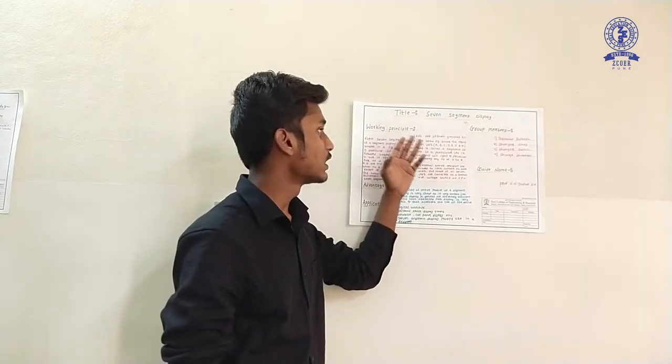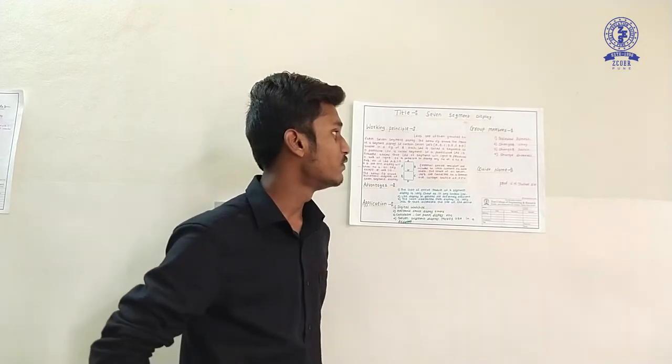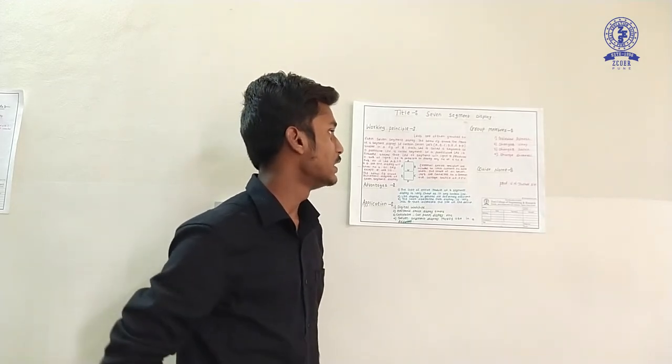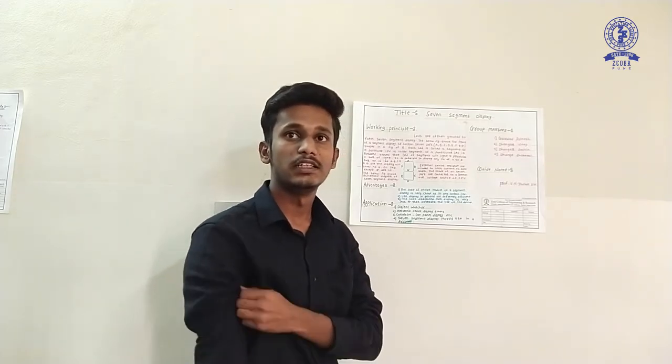The project working principle: LEDs obtained from seven segment display. The figure below shows the front of seven segment display. It contains seven segment display LEDs: A, B, C, D, E, F, and G.